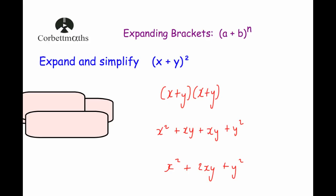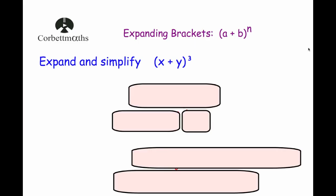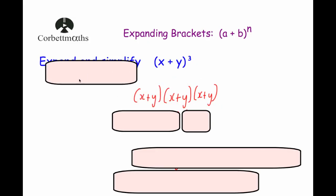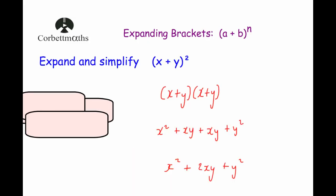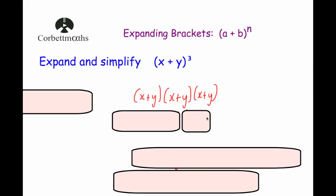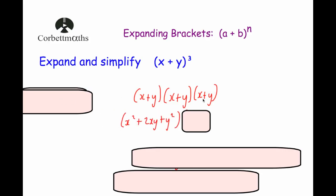Now we're going to look at a similar question but change the power from 2 to 3 — so instead of squared, we'll do cubed. To expand and simplify x plus y to the power of 3, I would write it out in full as x plus y, x plus y, x plus y. Expanding the first two brackets gives x squared plus 2xy plus y squared, and we'd still need to multiply by an x plus y.